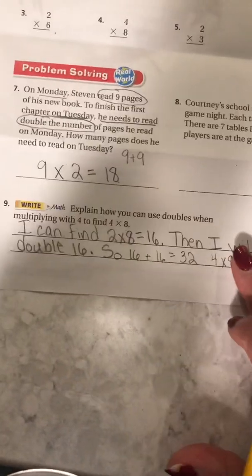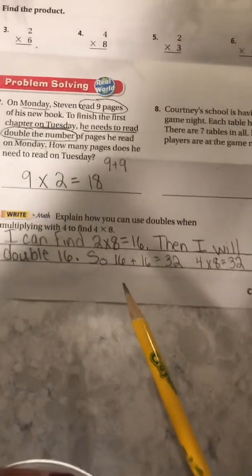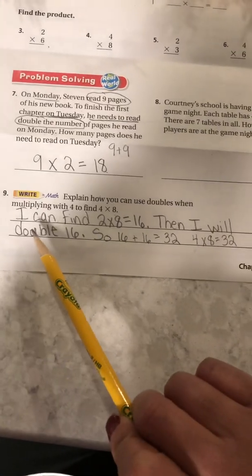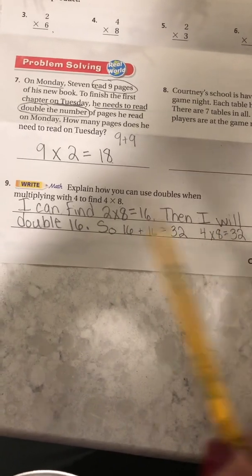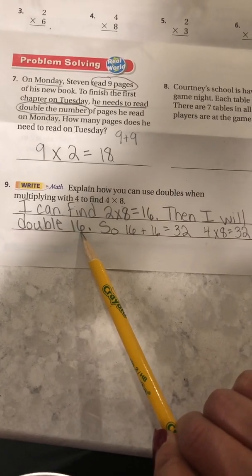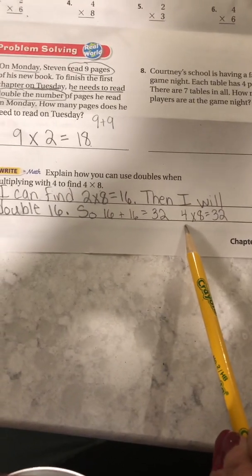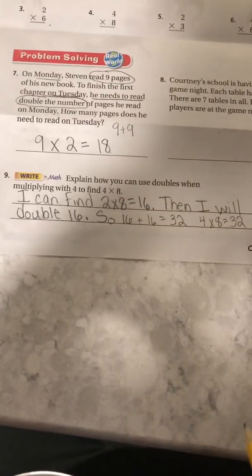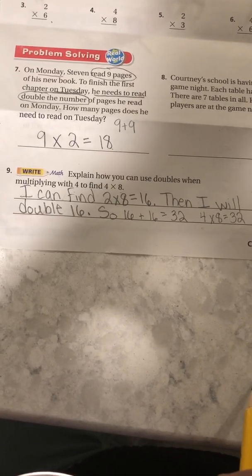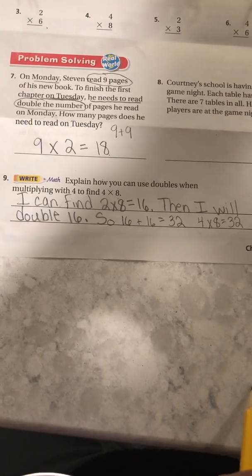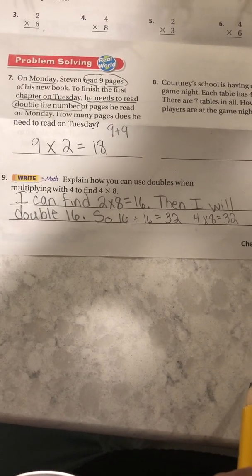I will hold it up so that everybody can copy. I know it looks a little cloudy on my screen — I have some decorations up creating a shadow on your homework. It says: I can find two times eight equals 16, then I will double 16, and 16 plus 16 equals 32, so now I know four times eight equals 32. If you're not finished when I go to the other side of the paper, pause the video, finish writing it, then hit play so you can start where I am.